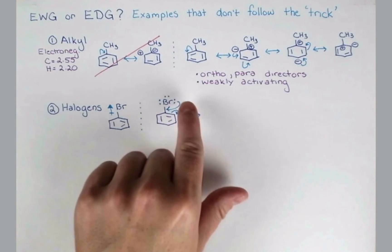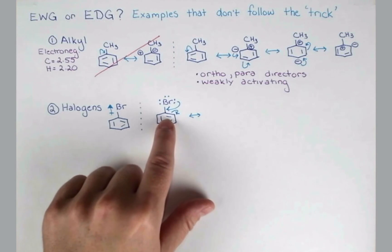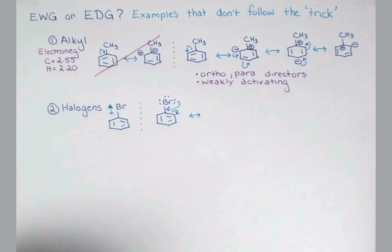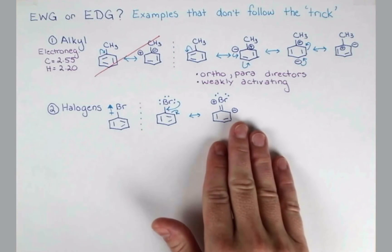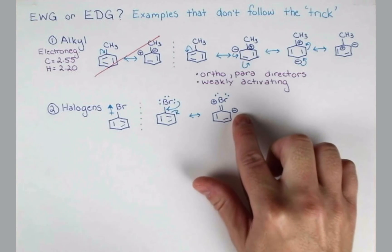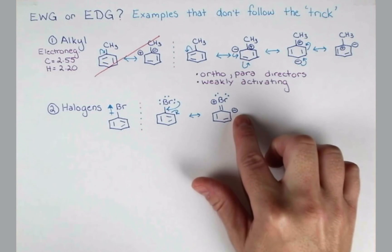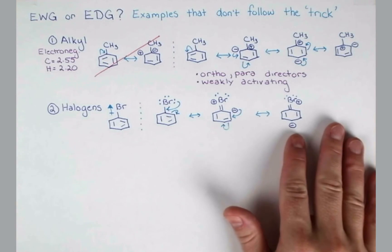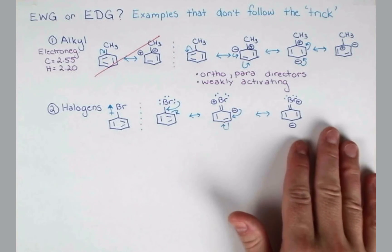If we push one of our lone pairs in to avoid making five bonds to this carbon, we'll have to push onto the adjacent carbon atom. And we get this. So here's a resonance form, one of our contributing structures with a negative charge at the ortho position. Let's take it two arrows at a time and see the next resonance form. We can see electron density at the para position.